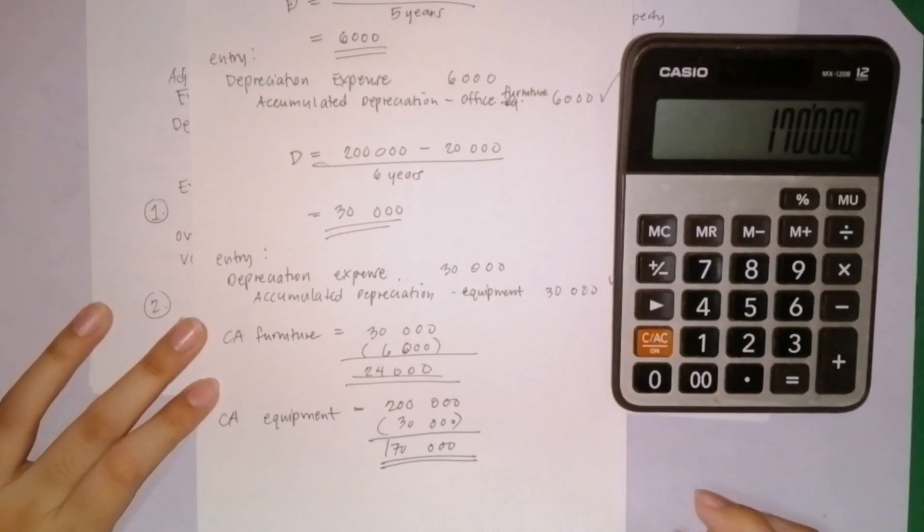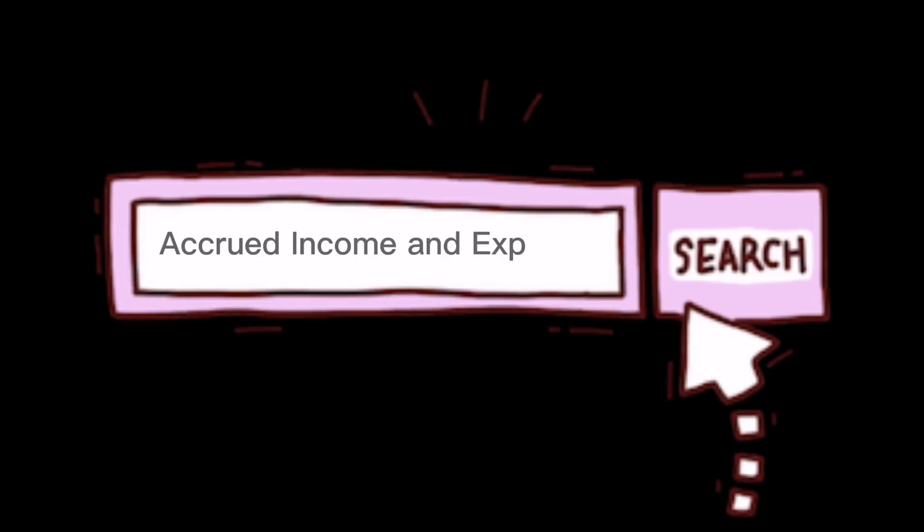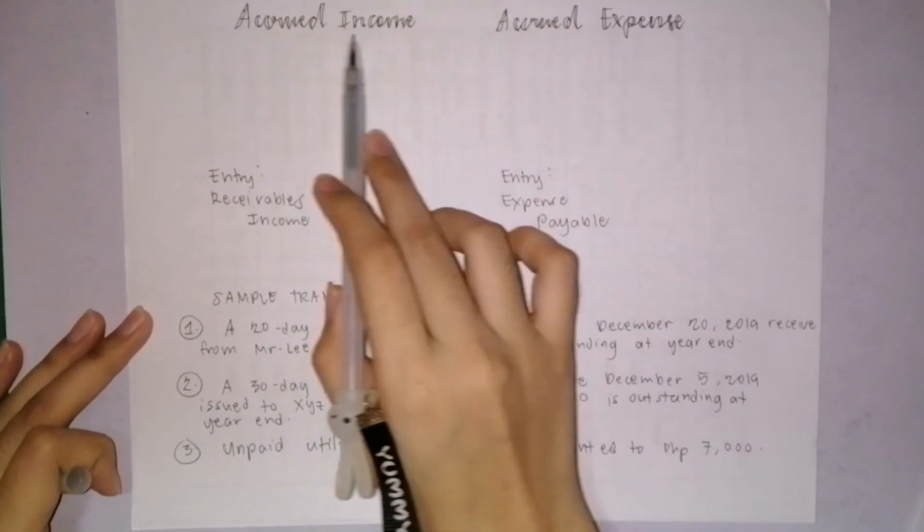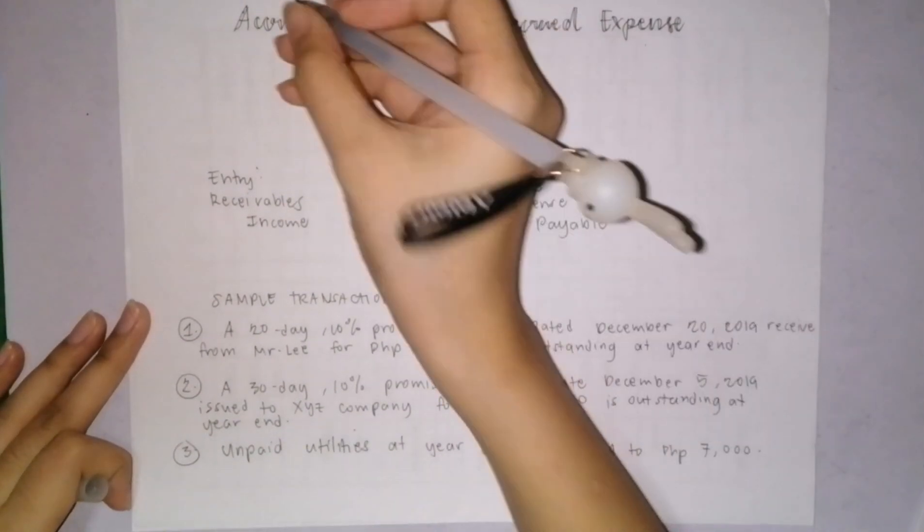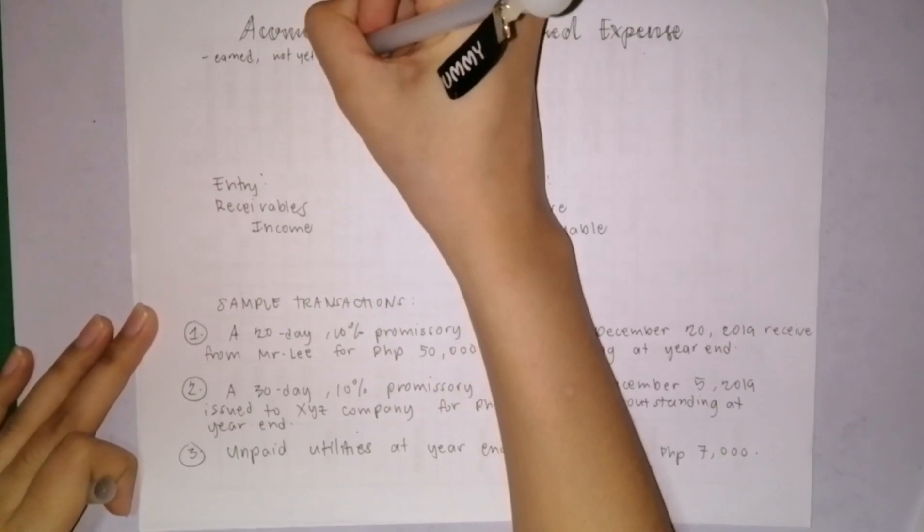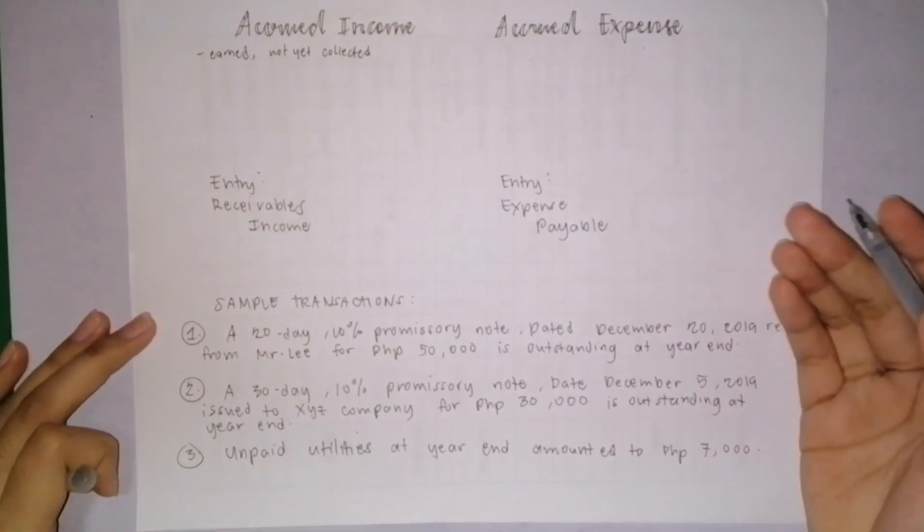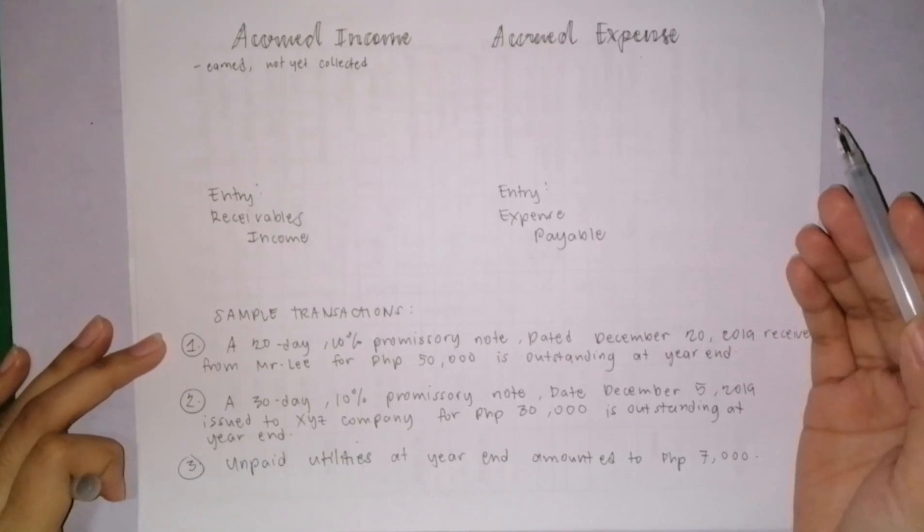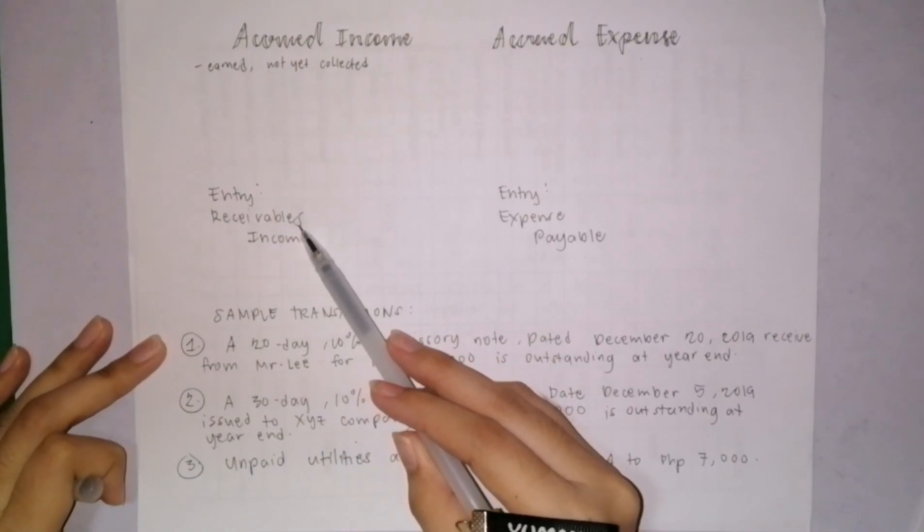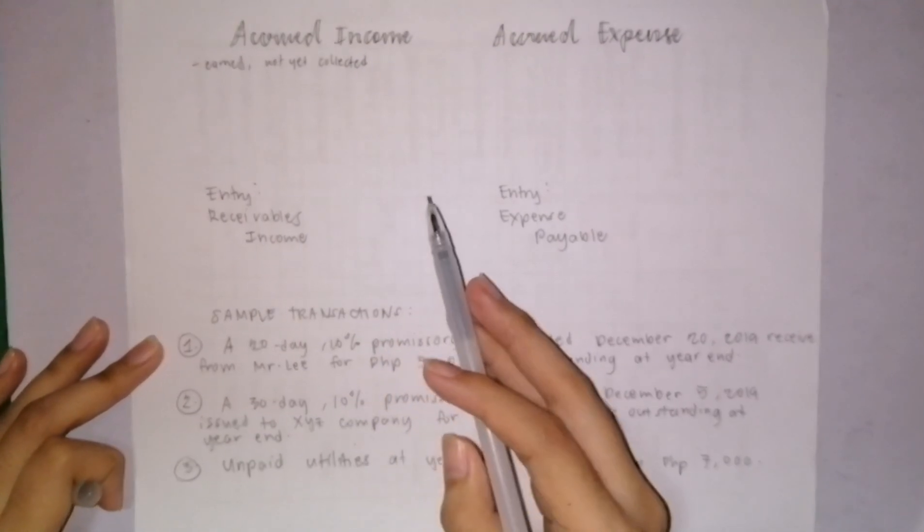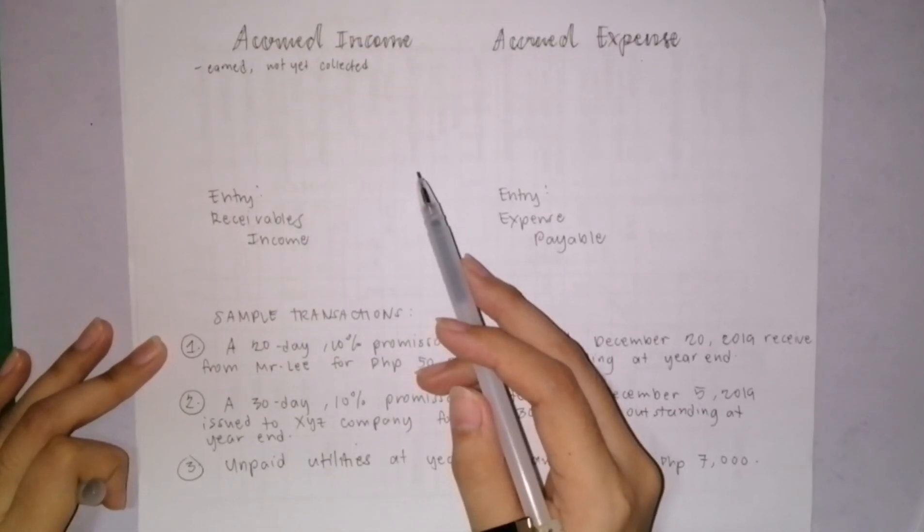Another type of adjusting entries are the accruals: accrued income and accrued expense. Accrued income are income already earned but not yet collected. If you're engaged in service activity, service rendered to customers is considered earned. If manufacturing or merchandising business, goods delivered to customers means income is earned. The pro forma entry to record accrued income is you debit receivables and credit an income account. Under accrual basis of accounting, when income is already earned, even if you haven't collected, you record income and receivables because you have the right to collect.